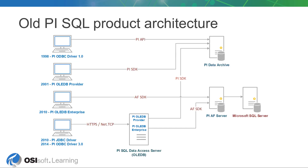And this is the visual representation of the old PI SQL architecture. As you can see, there are subtle differences between the drivers. They use different connection types, ranging from PI API to direct HTTPS or NetTCP. Also, some drivers connect directly, some use the PI SQL Data Access Server as an intermediary. This was one of the aspects we wanted to address in the new architecture.